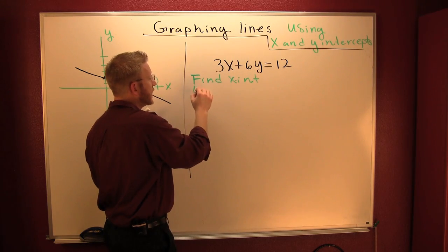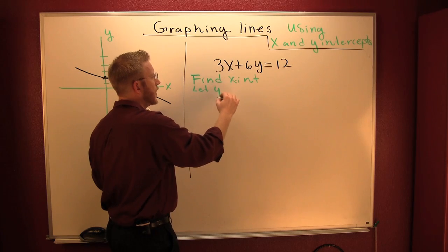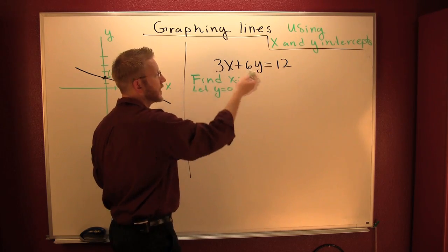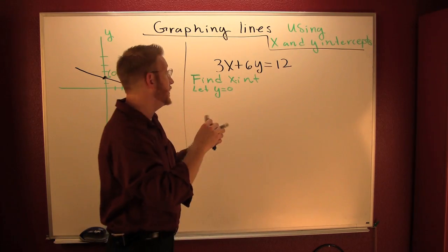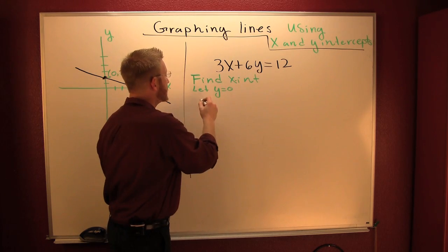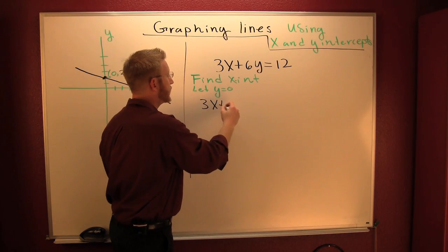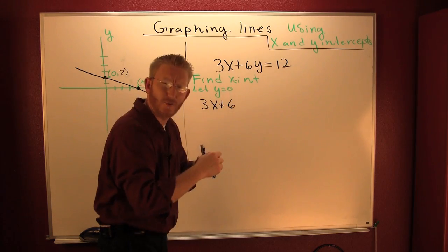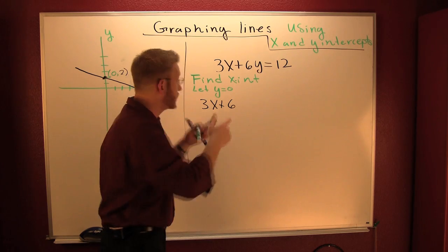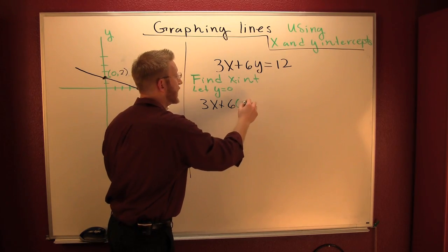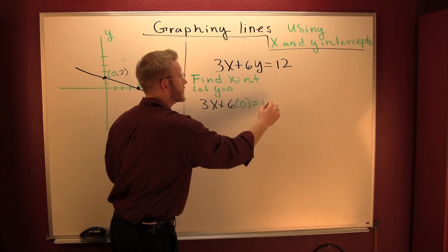To find the x intercept, I'm going to let y equal 0. I'm going to plug it into there, into my equation. This is 3x plus 6y. What does that y be? 0. Yeah. Times 0 is equal to 12.